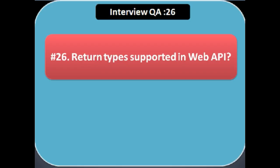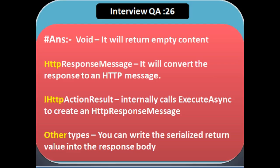Next question: what are the return types supported in Web API? First is void — it returns empty content. Second is HttpResponseMessage — it converts the response to an HTTP message. Third is IHttpActionResult — internally it calls ExecuteAsync to create an HTTP response message. And the last one is other types — you can write the serialized return value into the response body.